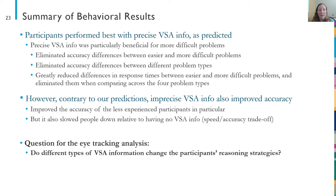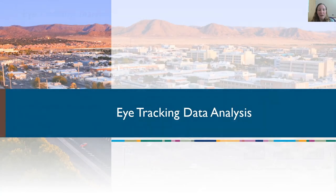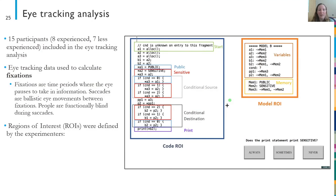Our question for the eye tracking analysis is: do different types of VSA information change participants' reasoning strategies? We had 15 participants in this analysis — eight more experienced and seven less experienced. The other participants were excluded because of a technical problem with the data collected from the eye tracker. The eye tracking data was used to calculate fixations — time periods where the eye pauses to take in information. Saccades are ballistic eye movements that occur between fixations, and people are functionally blind during saccades, so fixations are the only part where the brain actually takes in information. To analyze this data, we defined regions of interest on the screen, with a general region for the code and for the VSA information, and then sub-regions within those.